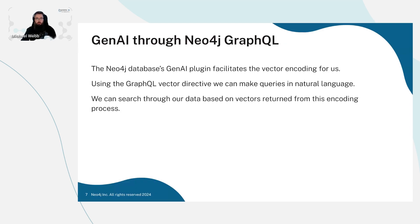What about Gen AI through Neo4j GraphQL? We can be using the Gen AI plugin from Neo4j itself. It facilitates the embedding generation for us — the encoding of the vectors. We can therefore query using natural language, like a phrase in English, and then search through the vectors in our database based on the response from a generative AI API.